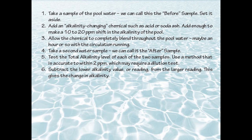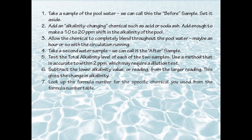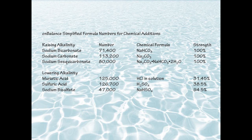After you've taken these two titrations and have the results, subtract the smaller reading from the larger reading — that tells you how much the alkalinity in the water changed as a result of the chemical you added. That's one piece of information needed in the formula: the alkalinity change. The other piece is the formula number that goes with the chemical you used. Here's a chart showing the most common chemicals used in the pool industry to change alkalinity, each with its formula number.